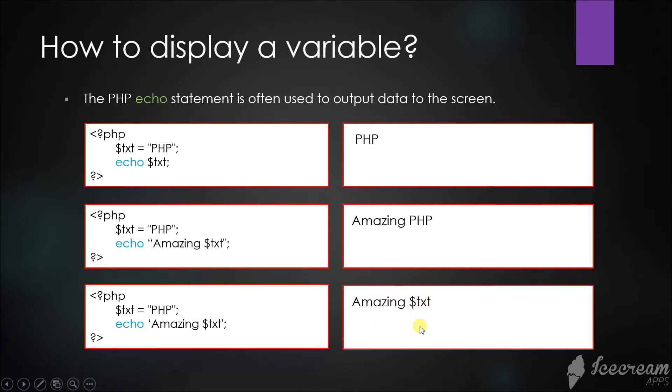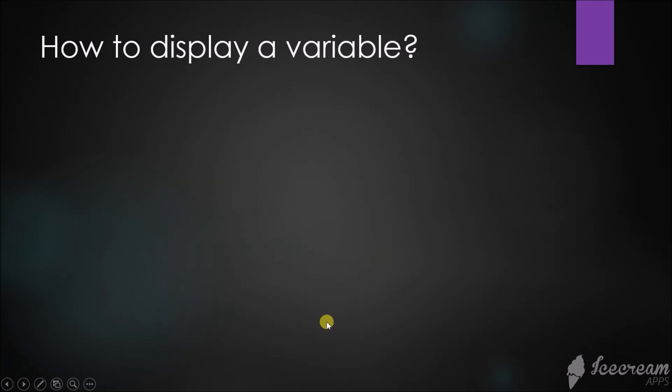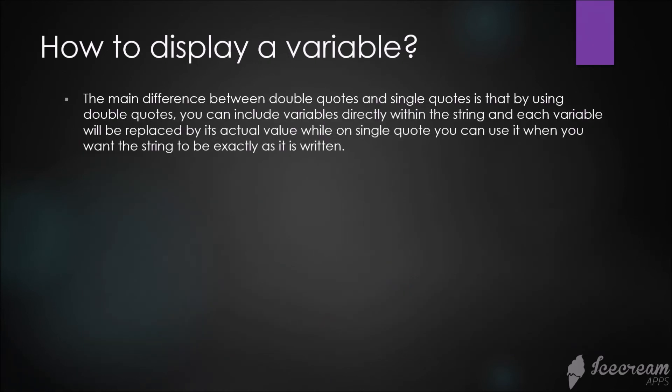There's a difference between double quotes and single quotes. The main difference is that by using double quotes you can include variables directly within the string and each variable will be replaced by its actual value, while with single quotes the string will be exactly as it is written.